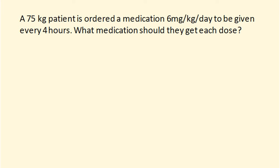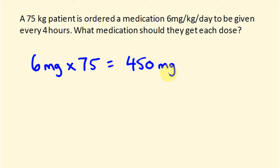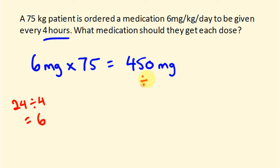A 75 kilogram patient is ordered medication 6 milligrams per kilogram per day, to be given every 4 hours. What medication should they get each dose? First work out how much medication they're getting for the day: 6 milligrams for every kilogram, and there are 75 kilograms, so all up they should be getting 450 milligrams. This is to be given every 4 hours — that's not telling us the number of doses, just how often. So the number of doses per day is 24 divided by 4, which equals 6. So 450 divided by 6 means each of the 6 doses should be 75 milligrams.